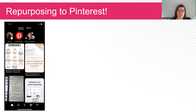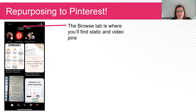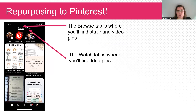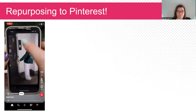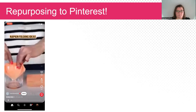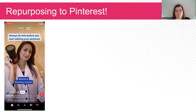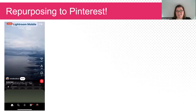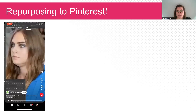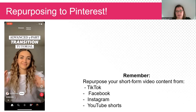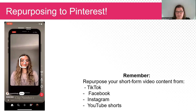So we're going to wrap up by talking about repurposing to Pinterest. This is the main screen from the app again. At the top you can see the browse tab — this is where you're going to find those static and video pins, based on the algorithm and things you've viewed previously. We then have the watch tab — this is where you're going to find idea pins and short form video, which is very similar to TikTok. Not many people are aware about the watch tab for Pinterest. As we scroll through, it shows multiple different examples of short form video available on Pinterest — it's so similar to Reels and TikTok, so it's important not to be sleeping on it. We want to remember to repurpose short form video content from TikTok, Facebook, Instagram, and YouTube shorts, and be putting it over onto Pinterest.